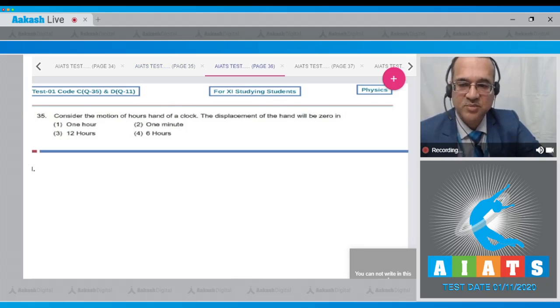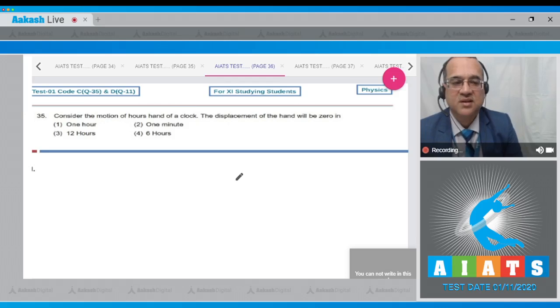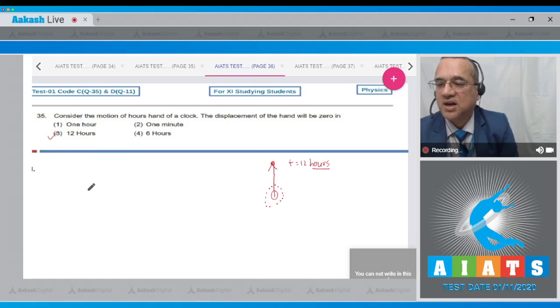Question number 35 says that, consider the motion of the hours hand of a clock, the displacement of hour hand will be 0 in 1 hour, 1 minute, 12 hours, or 6 hours. And as we know that if hour hand clock start from here, then it will turn back to the same spot after a time of 12 hours. And in 12 hours, its displacement of the tip become equal to 0. Therefore, option 2, this question, displacement will be 0 is 12 hours. The answer to this question is option number 3.